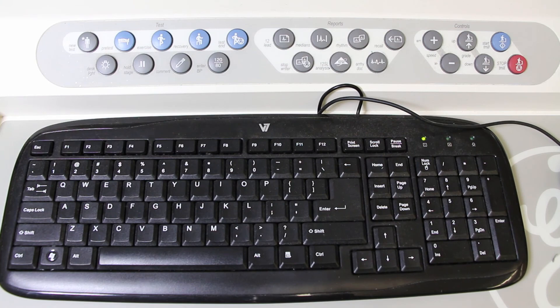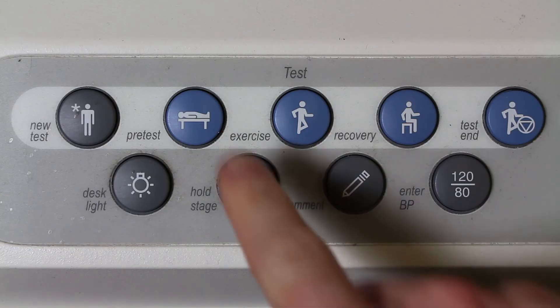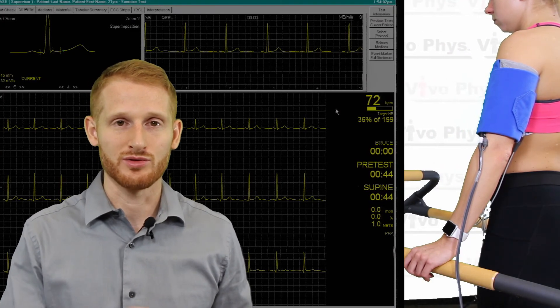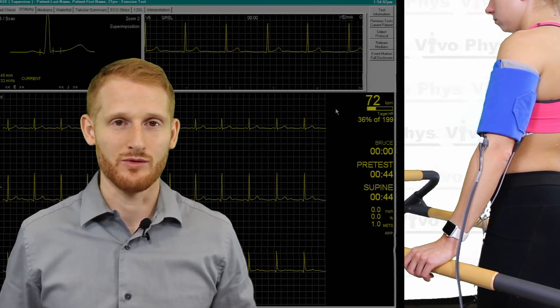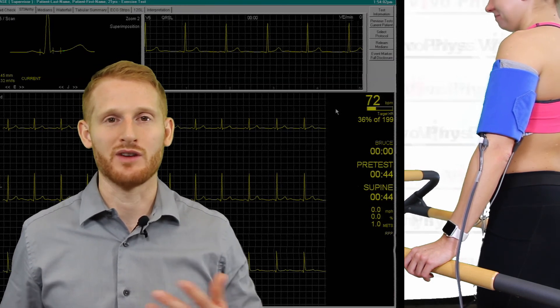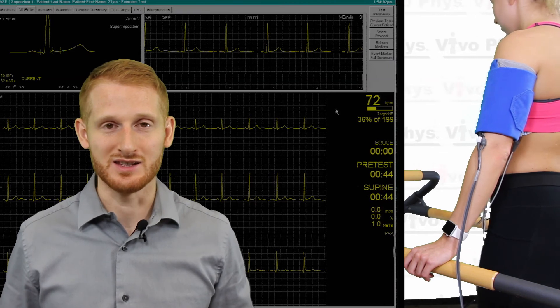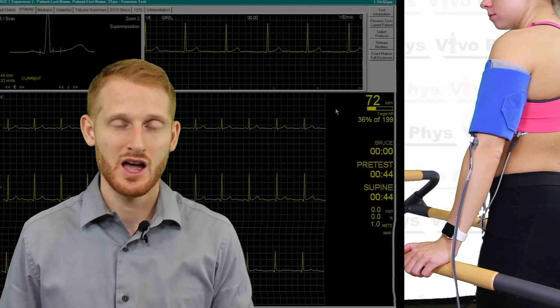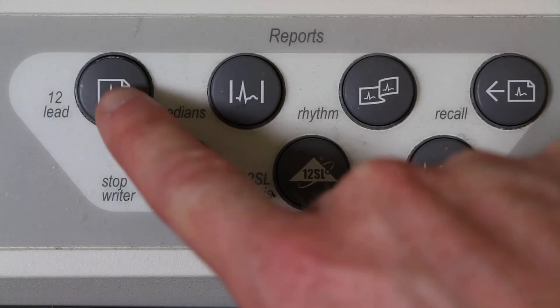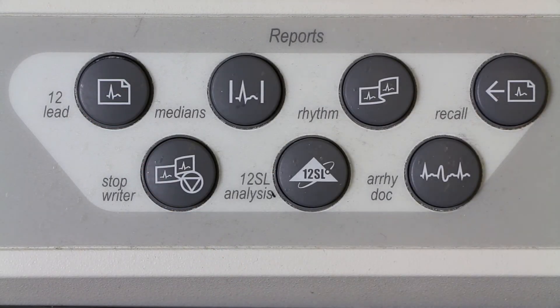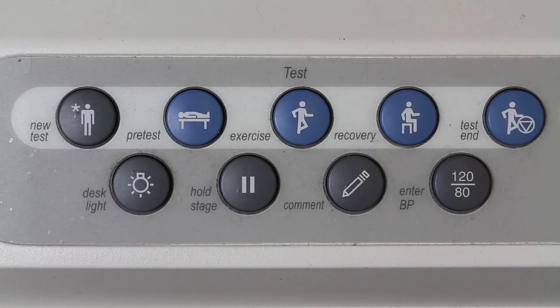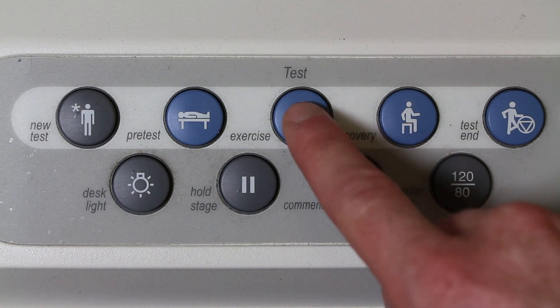If you go to the buttons above the keyboard, hit the pretest button. The pretest button is going to change the way the screen looks. You can hit the pretest button multiple times. It'll go through different phases of rest where you can record different things like hyperventilation and record what happens to their ECG during those different maneuvers. Most of the time, you're going to print a baseline ECG during that pretest phase just so you know what's happening at rest. Then you're going to hit the exercise button that's above the keyboard as well.